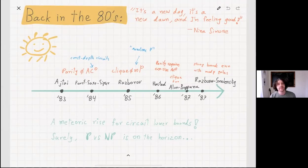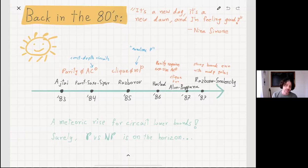Now I want to take you back to the 80s. The 80s were a happy, optimistic time, at least in complexity theory. If you'd open up the radio, you'd probably hear Nina Simone singing, it's a new day, it's a new dawn, and I'm feeling good. And the reason why the complexity community was so excited is because it seems that we were showing a lot of nice and strong circuit lower bounds. It started in 83, and there was a flurry of results, and it seems that every year we had major breakthroughs.